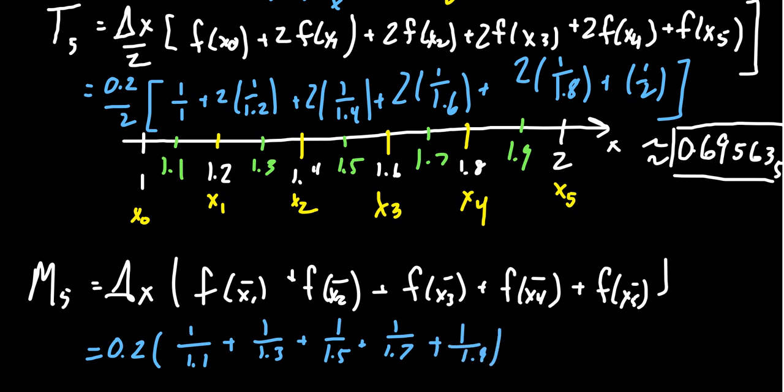So the midpoint rule, although it takes a little bit harder to find the midpoints, it's a fairly clean calculation in comparison. Again, you should use a calculator to help you with things like 1 over 1.1, 1 over 1.3, etc. But when you add those together and times it by the 0.2, you are going to end up with approximately, this is our answer, 0.691908.